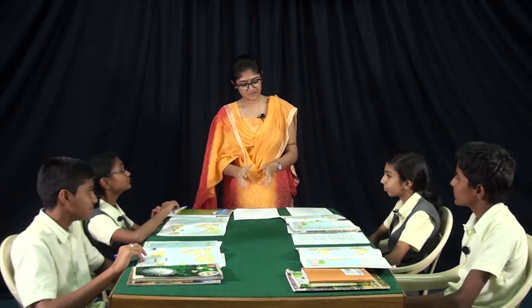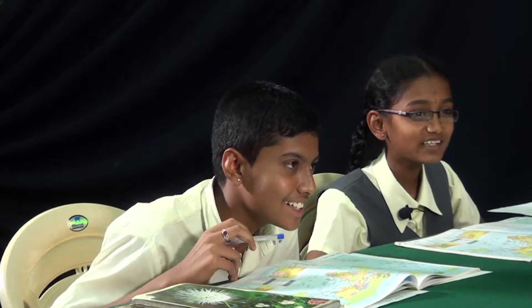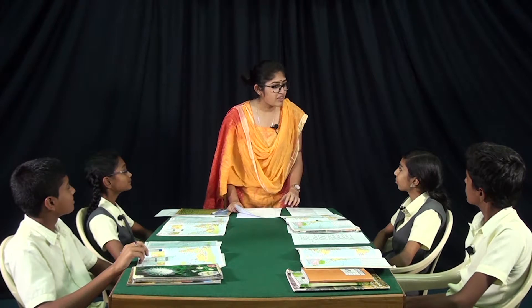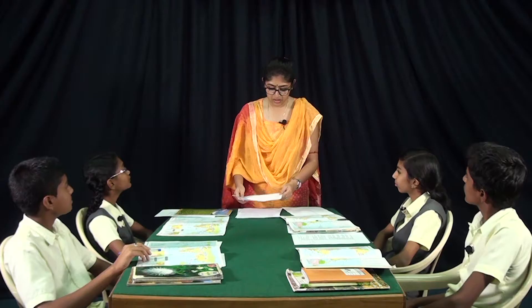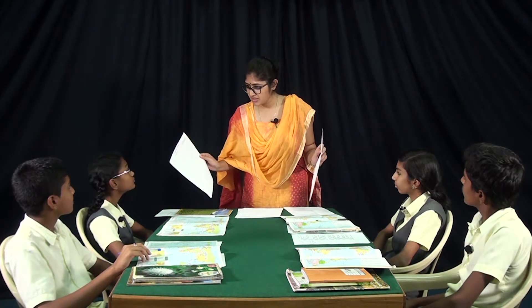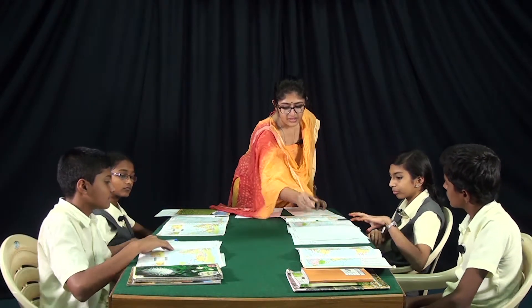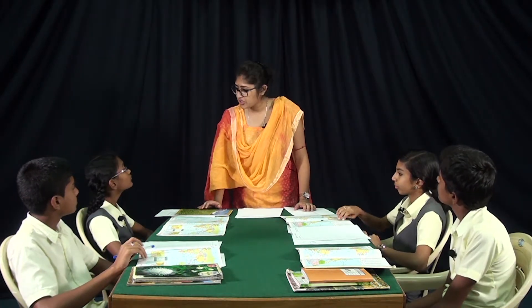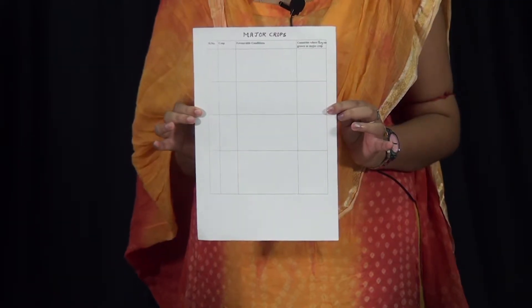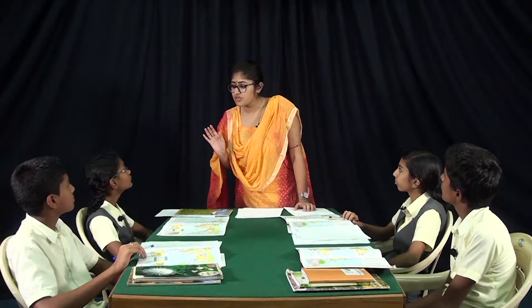Students discuss and select their crops. Radha and Surjit selected wheat, millets, cotton, and tea. Aisha and Francis selected jute, maize, and coffee. The teacher distributes separate worksheets to each group and instructs them to collect information, fill in the sheets, and prepare a presentation.